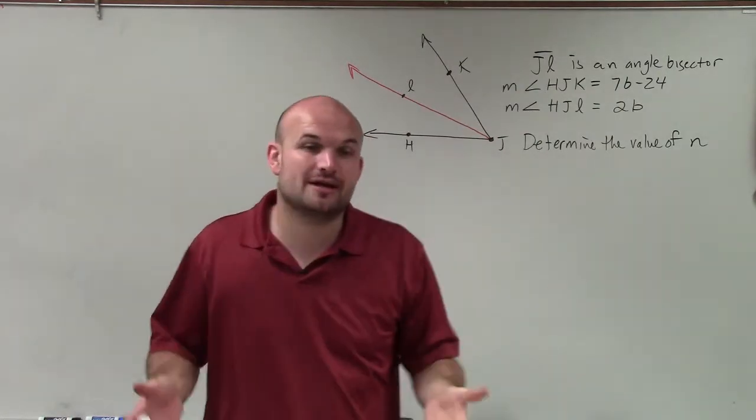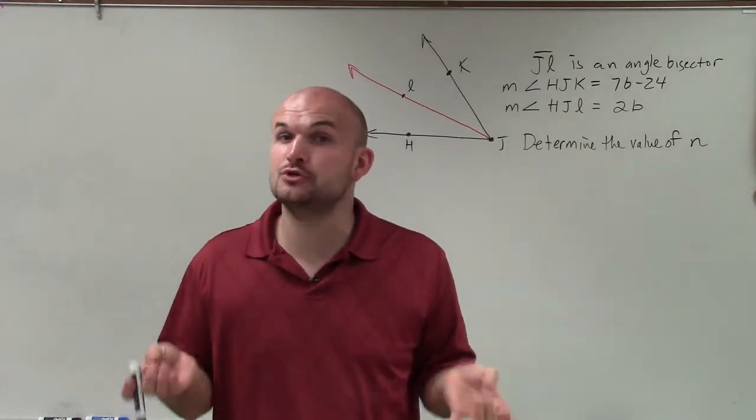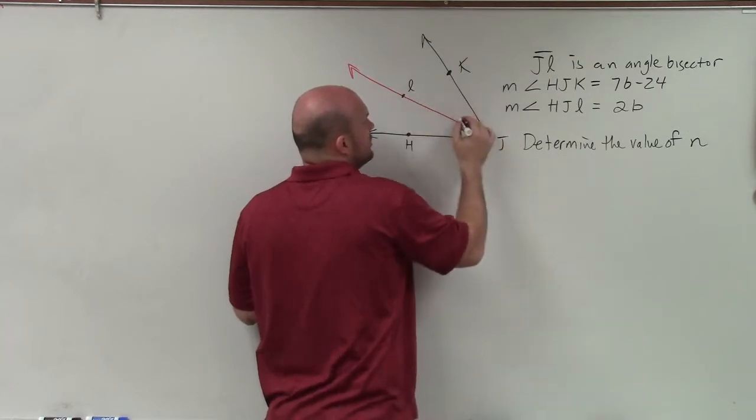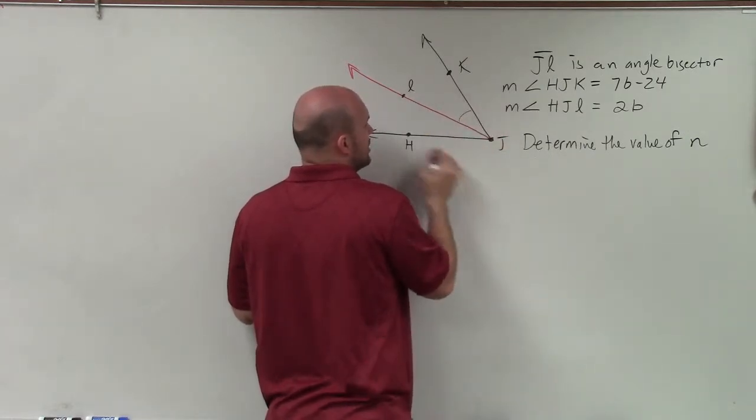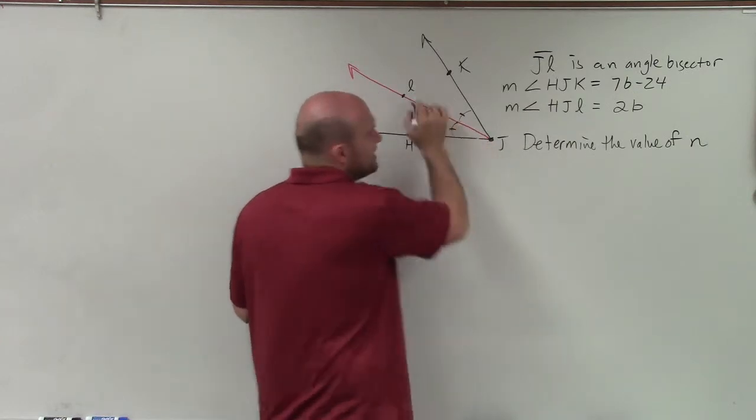Now, remember the definition of an angle bisector. An angle bisector is a ray that is going to divide an angle into two congruent angles. So we can say that the measure of angle KJL is equivalent to the measure of angle HJL. These two are equal in measure by the angle bisector.